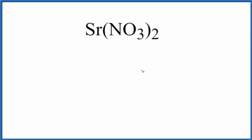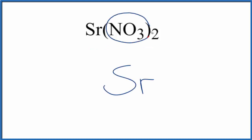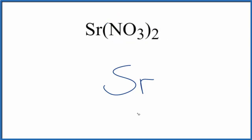So let's write the element symbol for strontium — we'll put it right here. Then for this nitrate ion, this is a polyatomic ion. We have two of them, so we'll put one on either side of the strontium.